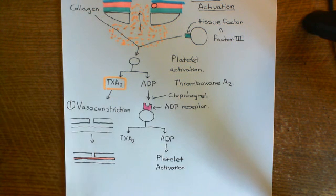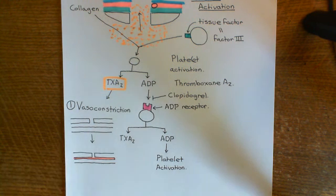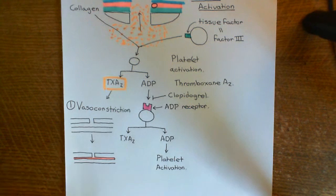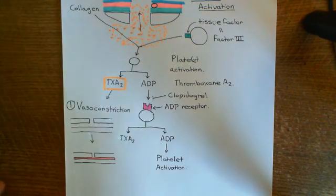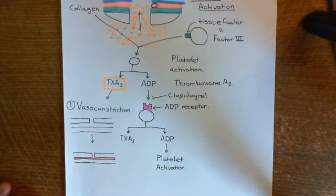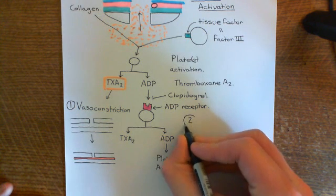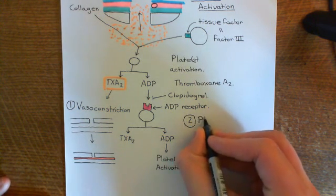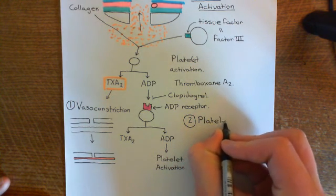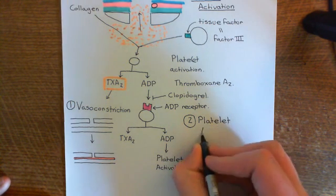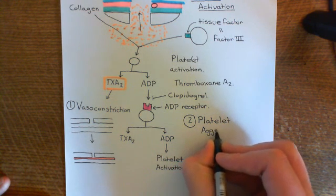Vasoconstriction — you don't want that happening somewhere where there's no problem, because you're just going to stop blood from getting to whichever place that blood vessel supplies blood to. Now, thromboxane A2, if we continue on with this pathway, has another role in hemostasis. The first characteristic thing which happens in hemostasis is vasoconstriction. The second major thing which happens is platelet aggregation — and it's thromboxane A2 which is going to activate platelet aggregation.